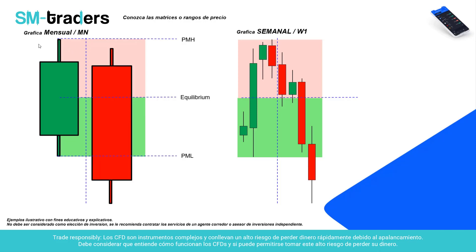Esas huellas de precio son los order blocks o bloques de orden institucional, bloques de pedido, bloques de mitigación, fair value gaps —que son las brechas de valor razonable—, liquidity points —que son los vacíos de liquidez—, entre otros términos que vas a ir aprendiendo a lo largo de este curso.